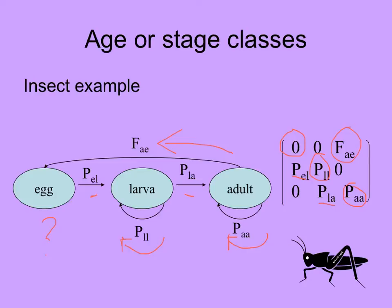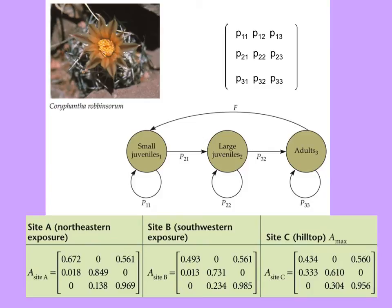Now let's look at the matrix for the little cactus Corifantha robensorum. The probabilities of staying the same are all along the diagonal. The stages are small juveniles, large juveniles, and adults. This matrix hasn't taken into account seeds or seedlings, because those are hard to determine in a shorter-term study. Along the diagonal are the probabilities of staying in the same size class. Here is the probability of going from stage 1 to 2, and from 3 to 2. The probability of going from 2 to 1 is probably zero, and regression from 3 to 1 — maybe if things get eaten, but the way cacti grow, probably not.